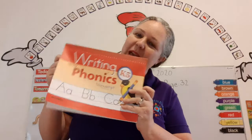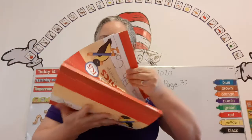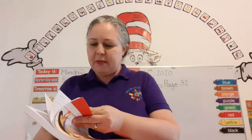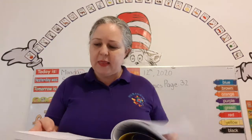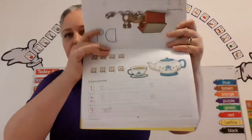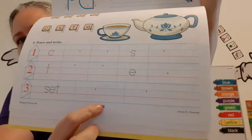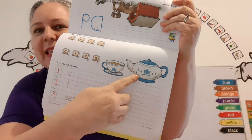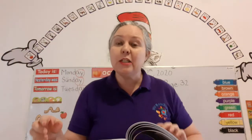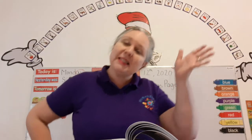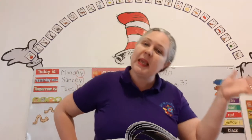Here's our Writing with Phonics book. Did you get it? Okay, get it out. Here we go. Let me find the page — 31, 32. Right down here, it says page 32. And look, it's a little teapot! I'm a little teapot, short and stout. Here is my handle, here is my spout. When I get all steamed up, hear me shout — just tip me over and pour me out.